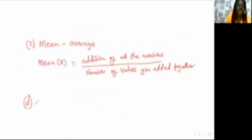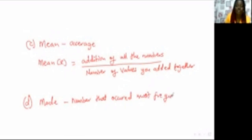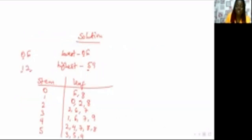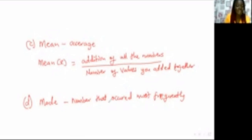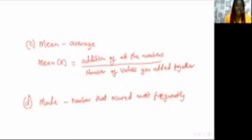Then the last one is the mode. The mode is the number that occurred most frequently. Check your table and identify the number that appears most often. To summarize: for stem and leaf plots, the stem is at the left and the leaf at the right. A single digit has a stem of zero. Identify the lowest and highest number, label them as your stem, then fill in the leaves.